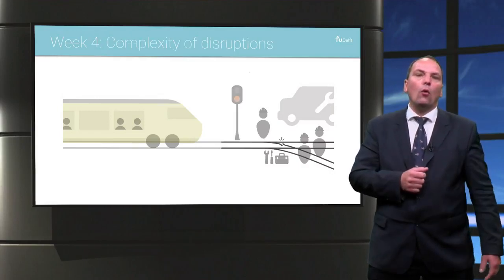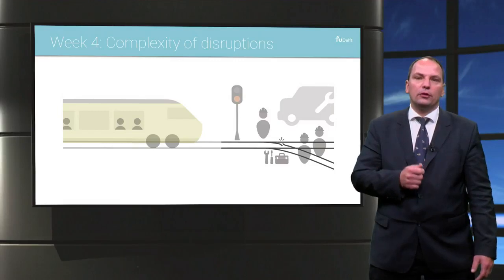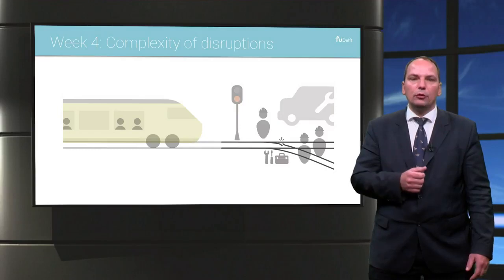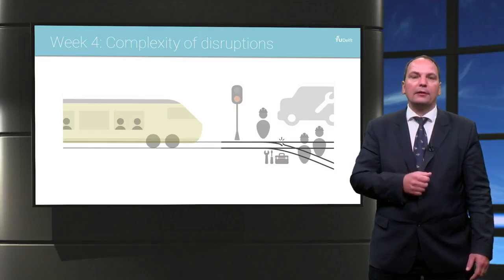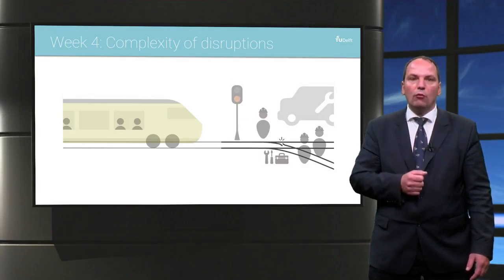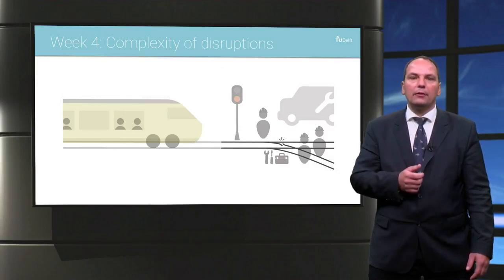Now that all aspects of the system in healthy condition have been introduced, week 4 will introduce what happens when things do not go as planned. It will not only focus on what can go wrong, but as well on how to act in case things do go wrong, to limit the impact as much as possible.